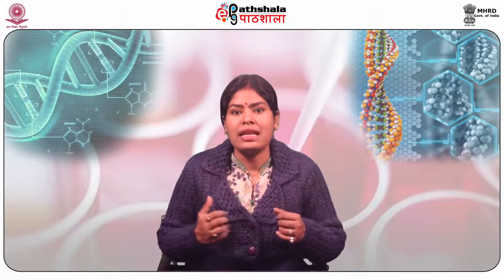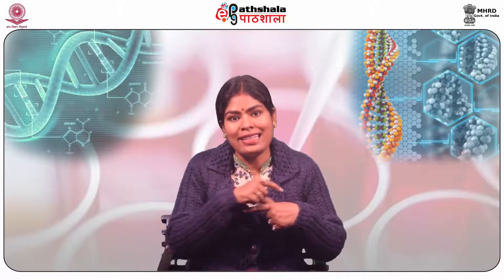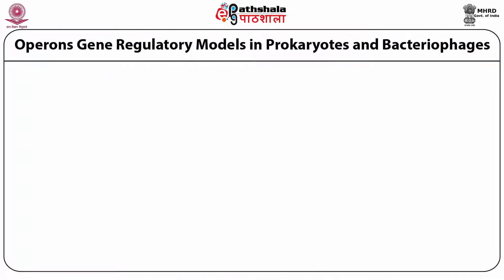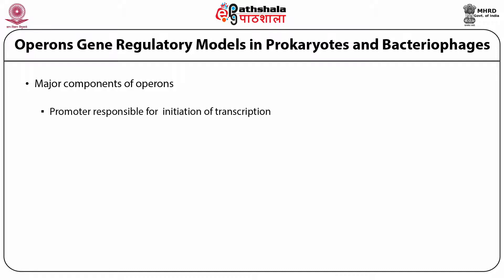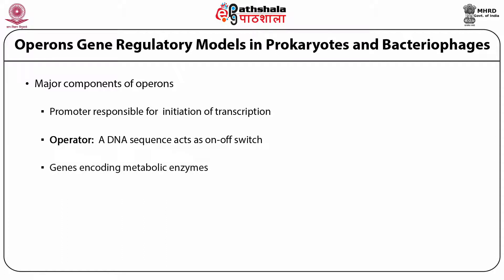The bacterial chromosome is a large circular molecule of DNA. Thus, the genes of the Operon are arranged in a linear manner at a specific location. Major components of Operons: a promoter responsible for initiation of transcription, an operator which is a DNA sequence and acts to turn on and off the Operon, genes encoding the metabolic enzymes, and a repressor or an activator.